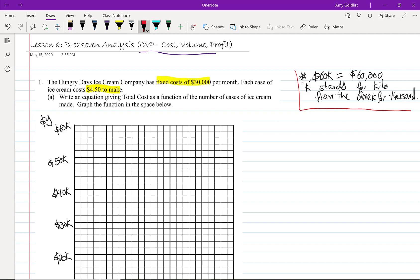Well, we know from last time that our cost equation is fixed costs plus variable costs times x, where x is the quantity. So in our case, we have $30,000 plus $4.50 for every case of ice cream.